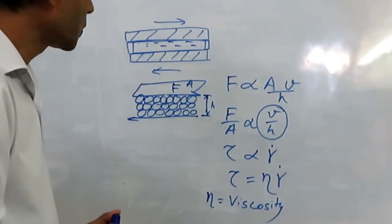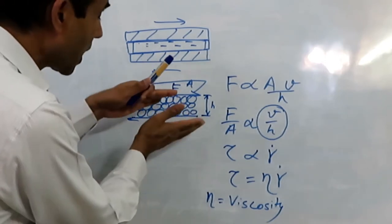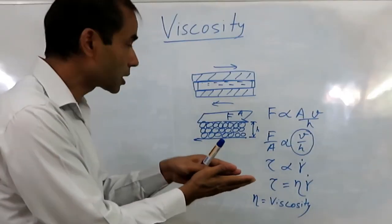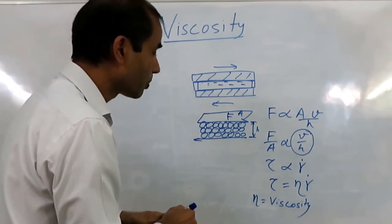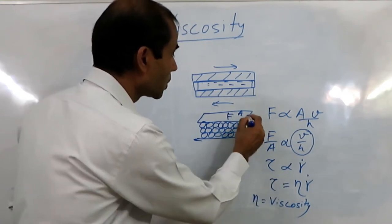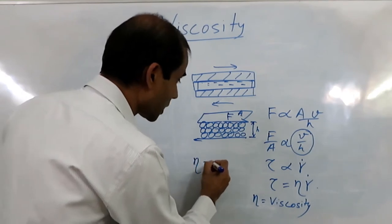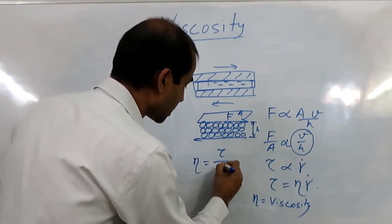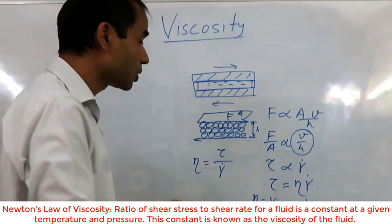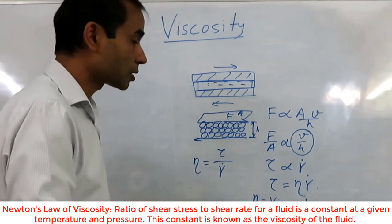If we want to know the viscosity of a fluid, we place the liquid between two plates, apply shearing force, and measure the force. We need to know the area to find shear stress, and we need the velocity and H to find shear rate. Then we can find viscosity as tau over gamma dot. This viscosity is very sensitive to temperature and pressure, so we must know the viscosity at any given temperature and pressure.